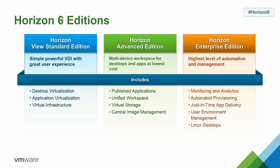The Horizon 6 packaging and licensing is available in three editions. First, the Horizon View Standard Edition provides a simple and powerful VDI solution with a great user experience, including core virtual desktops plus ThinApp for application virtualization. For customers needing more flexibility to deliver desktops and applications across any device at a lower cost with enhanced automation, the Horizon Advanced Edition is a great choice. Finally, the Horizon Enterprise Edition is for customers building an enterprise-ready cloud with full orchestration and automation, along with everything in the lower packages.